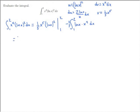This is 1/5. Plugging in 2, I have 32 natural log of 2 squared. Plugging in 1, I get 1/5 times — natural log of 1 is 0 — so minus 0. Minus 2/5 integral from 1 to 2 of x to the fourth natural log of x dx.